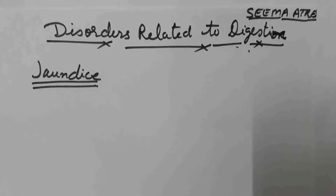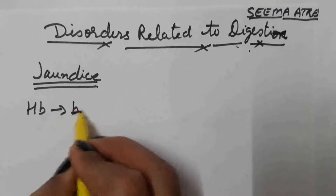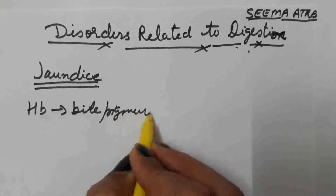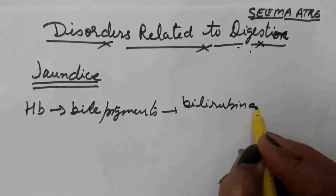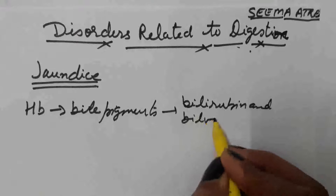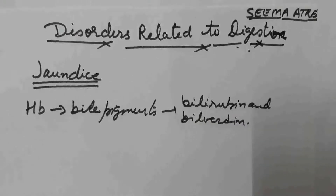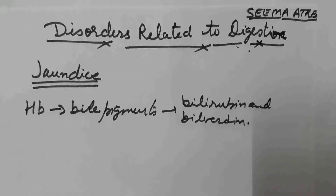Bile pigments kaise bante hain? Jab RBC break hoti hain, toh hemoglobin is converted into bile pigment. Bile pigments kaun se hain? Bilirubin and biliverdin — they are expelled out along with the fecal matter or undigested waste. If the liver is affected, then bile pigments do not get expelled out along with the fecal matter; they start depositing in our body, under the skin or under the eye, giving a yellow color.